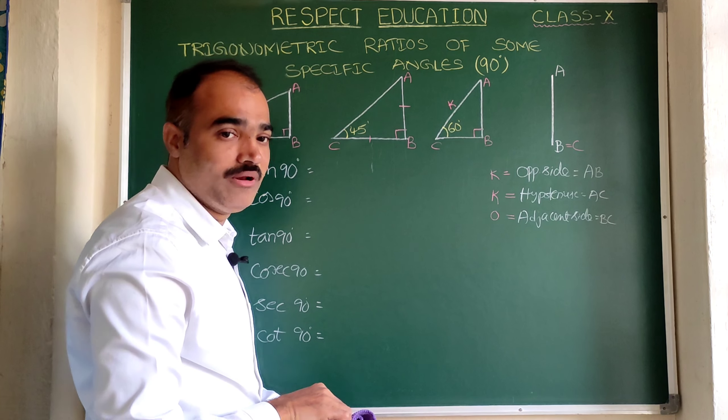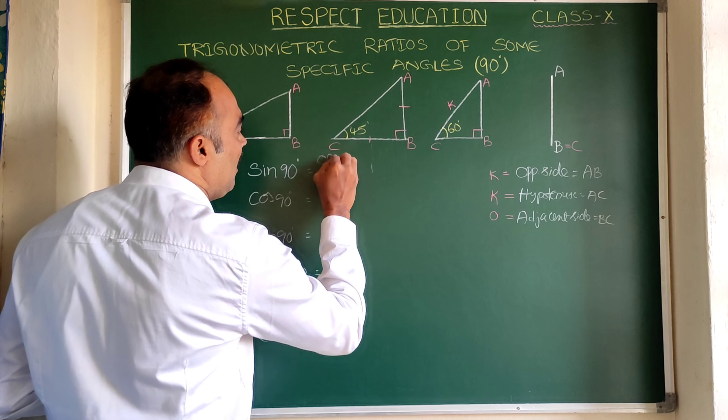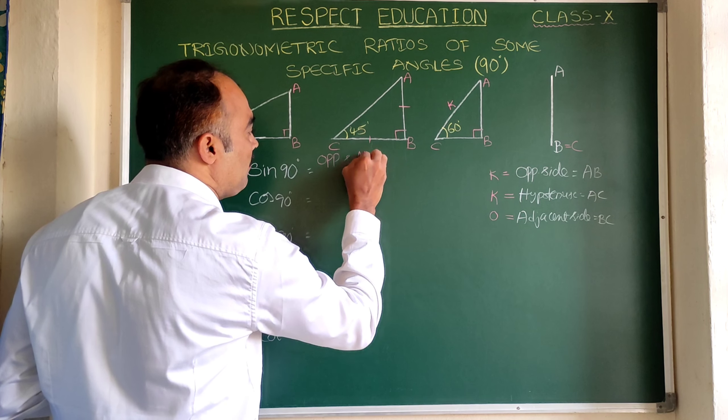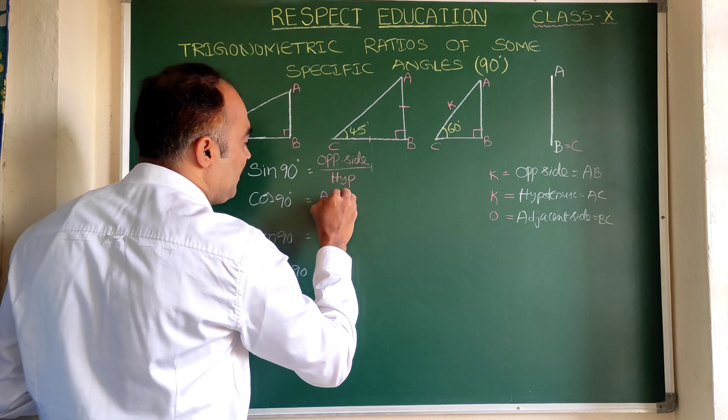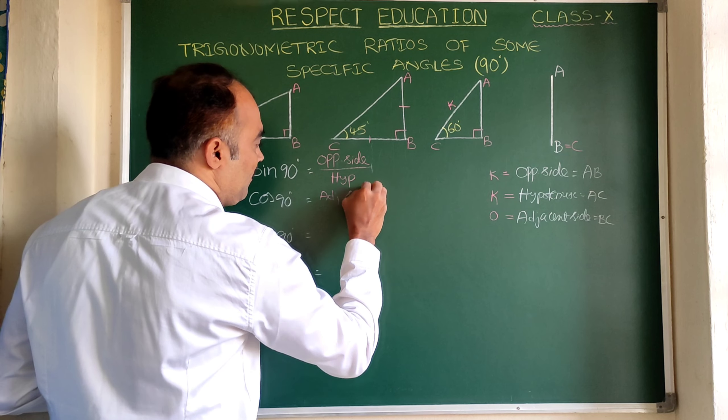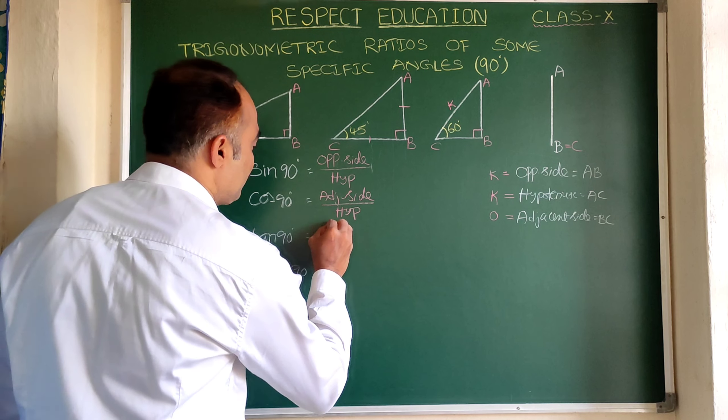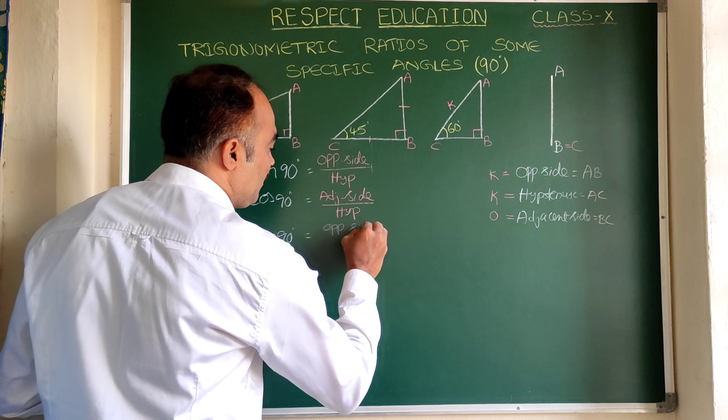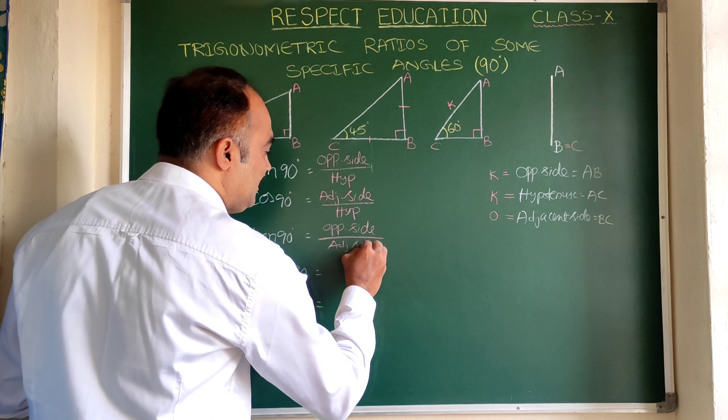Let us add the suitable formula first. Sin 90 formula: sin theta, opposite side to theta by hypotenuse. Cos theta: adjacent side to theta by hypotenuse. Tan theta: opposite side to theta by adjacent side to theta.